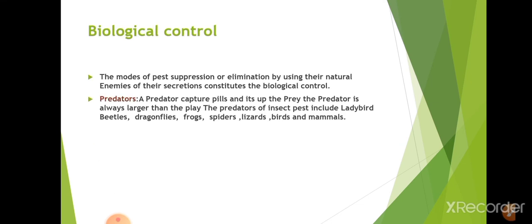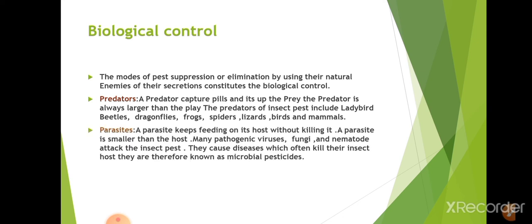Biological control uses natural enemies of insects or their secretions to suppress or eliminate pests. Predators capture, kill, and eat prey — they are always larger than the prey. Examples include ladybird beetles, dragonflies, frogs, spiders, lizards, birds, and mammals. Parasites feed on the host without immediately killing it; parasites are smaller than the host. Many pathogenic viruses, fungi, and related organisms attack insect pests, cause diseases, kill the host, and are therefore known as microbial pesticides.